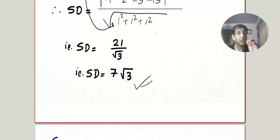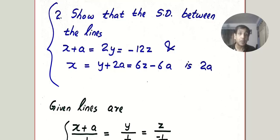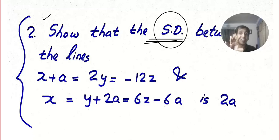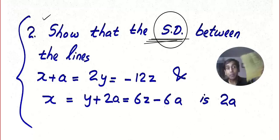Now I'll show you a question asked in many universities many times. The question says 'show that the shortest distance' — I'll abbreviate it as SD. They are asking only the shortest distance, not the equation. Read the question paper properly — they are asking only the shortest distance.